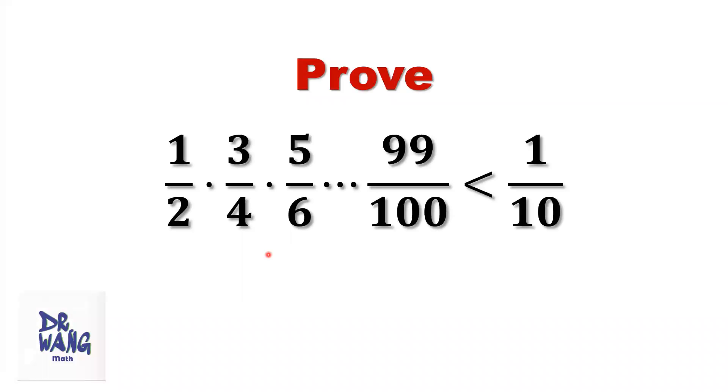Hello, everyone. I'm Dr. Wen. Here is the question. Prove 1 over 2 times 3 over 4 times 5 over 6 times, until times 99 over 100 is less than 1 over 10.